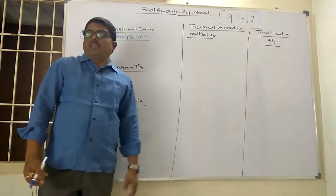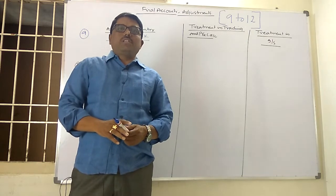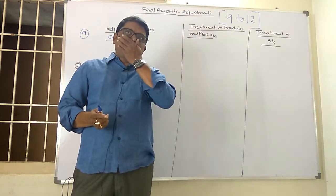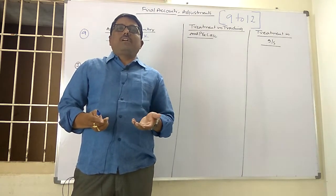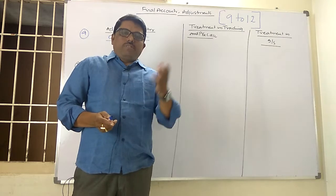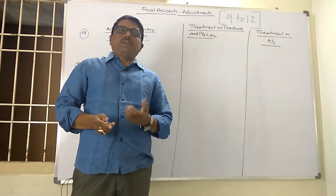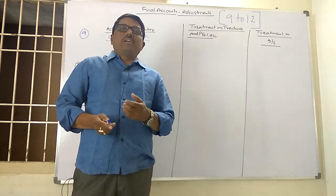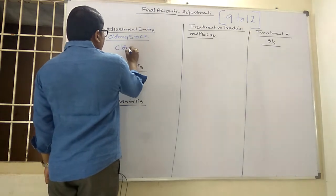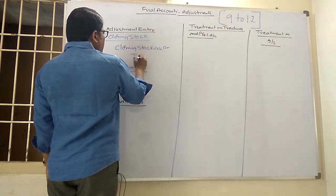What do we mean by closing stock? Generally every business at the end of the year, when it would like to know the profit or loss of the business, there will be certain unsold stock left at the end of the period, which we call closing stock. Since it is an asset to the business, closing stock is to be debited. The entry is: Closing Stock Account Dr. to Trading Account.